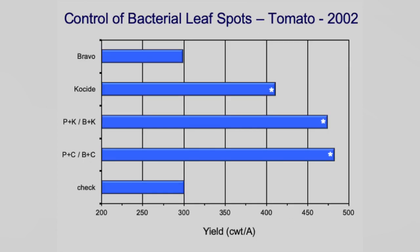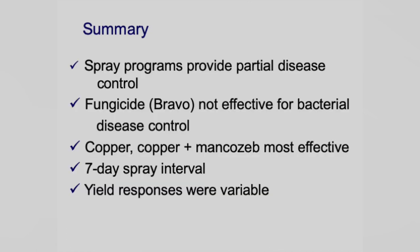Unfortunately there was no yield effect from those treatments. These yields were only about a quarter of the yield of that previous Bixby trial — the ground is pretty tight in Stillwater and they went through adverse conditions with the heavy rain early on. The Bixby ground is silt loam — good ground. On bacteria, if you had fungi and sprayed with Bravo you'd probably get better results. Bacteria are very hard to control. The bravo is not effective for bacterial disease, but the yield responses overall were variable.